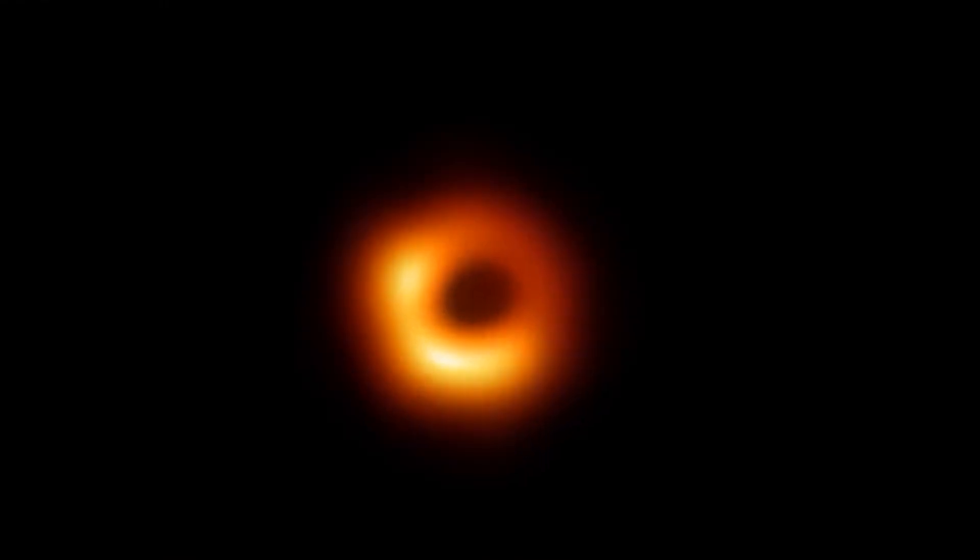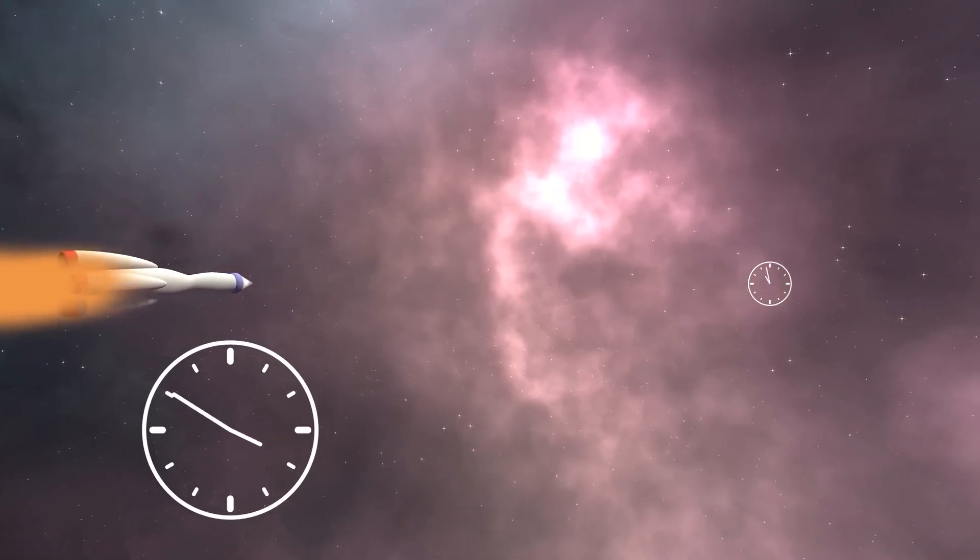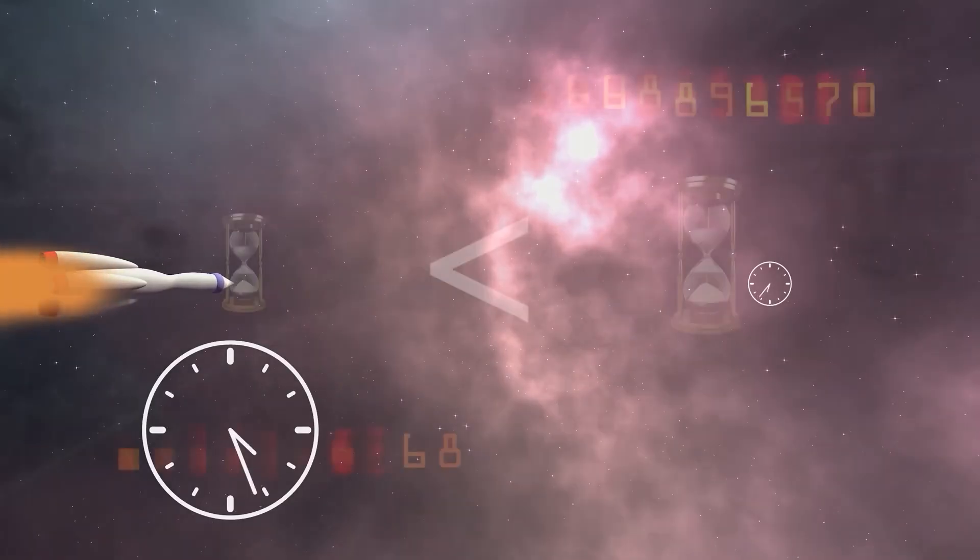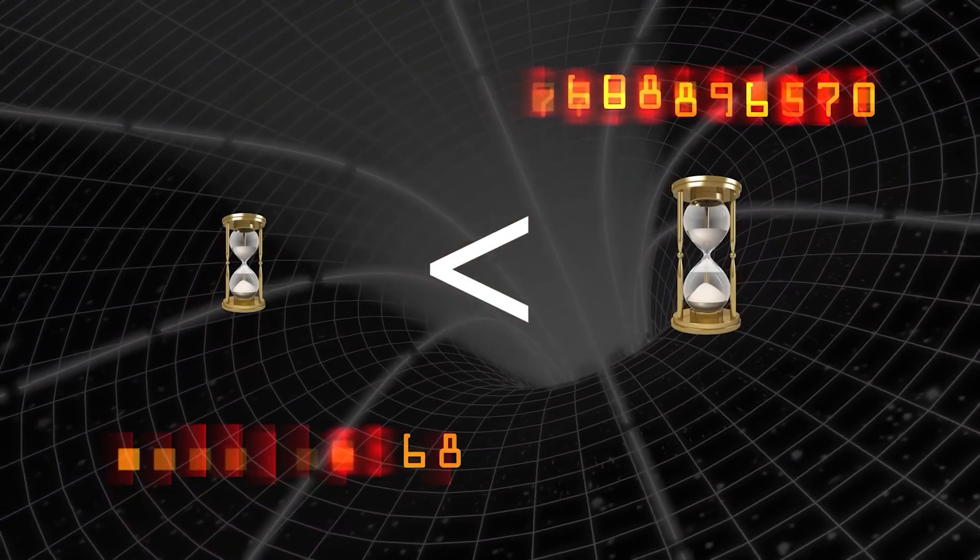If you stood far away and watched an object fall toward that region, you would see it slow down, its light redden and dim, until it seemed to freeze at the invisible boundary known as the event horizon.